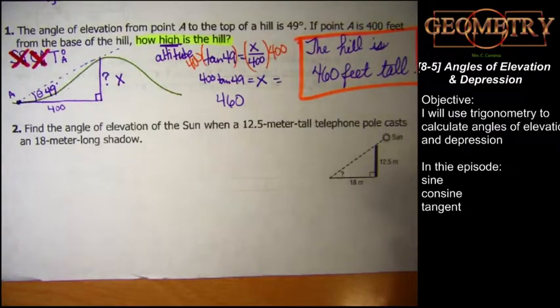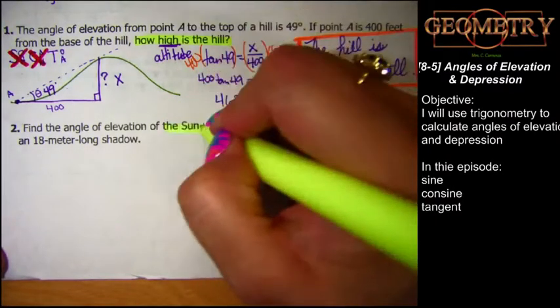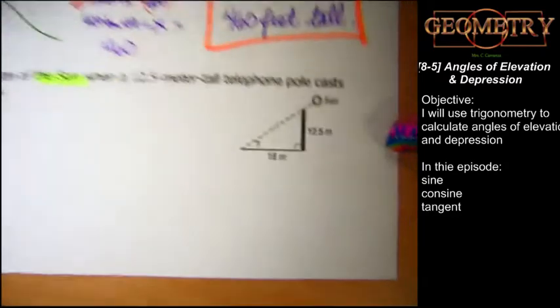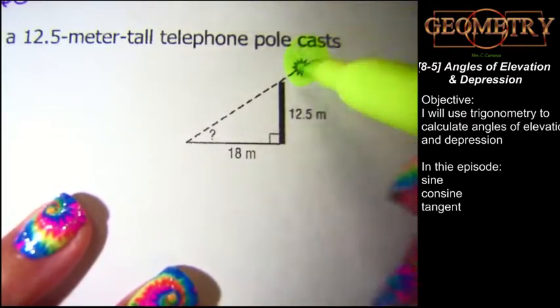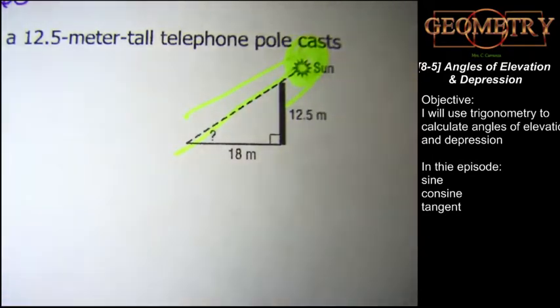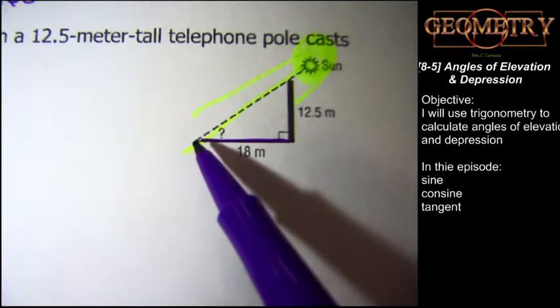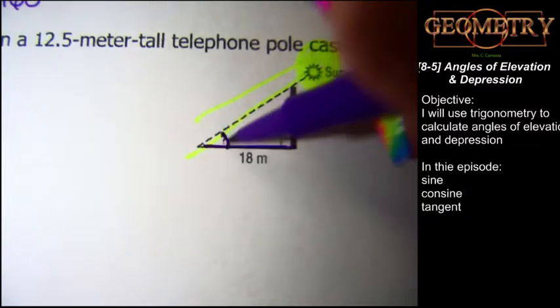Another. Find the angle of elevation. Pause. Am I looking up or am I looking down? Up. Elevation is up. Find the angle of elevation of the sun when a 12.5 meter tall telephone pole casts an 18 meter long shadow. So they've already drawn a figure for me, which is also helpful. I don't have to draw it myself. So I'm going to go ahead and colorize this thing. Here is my figure. Here is my sun and the sun is casting rays and shining all over the place. And one of the rays is striking the very top of the telephone pole and it's causing this 18 meter long shadow.